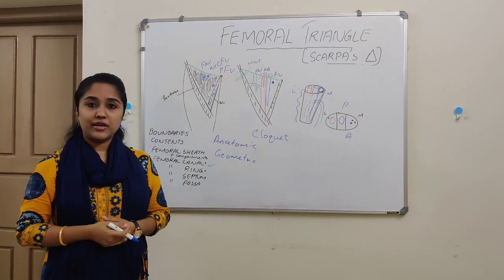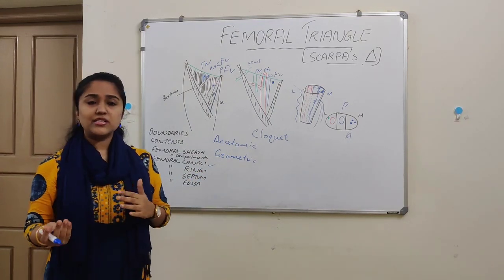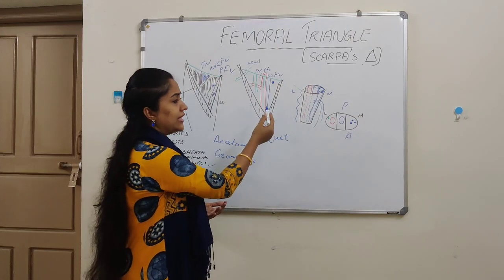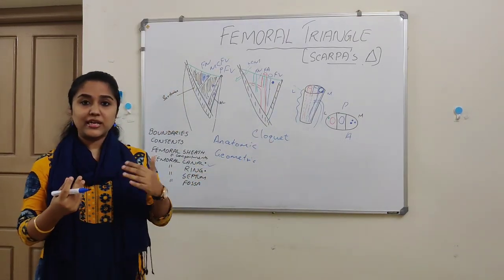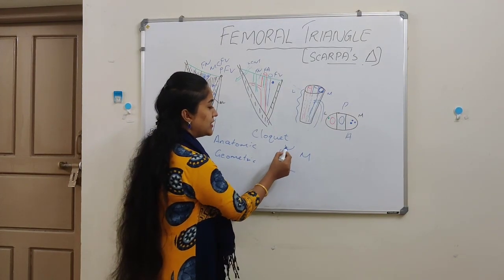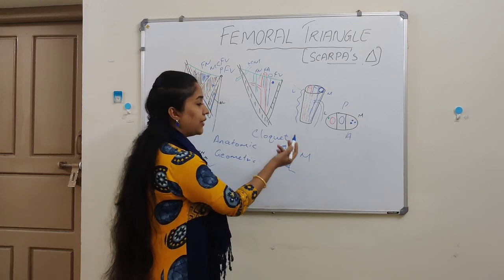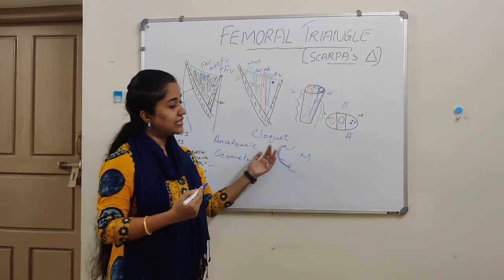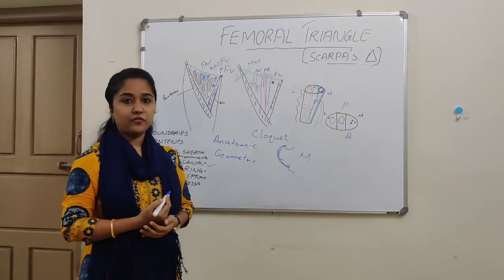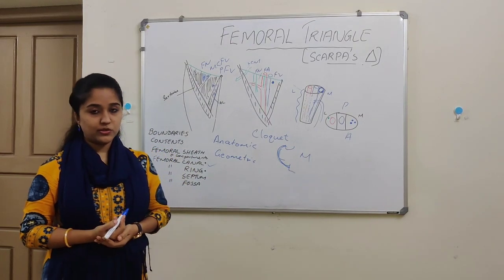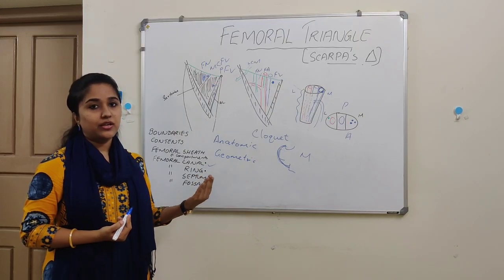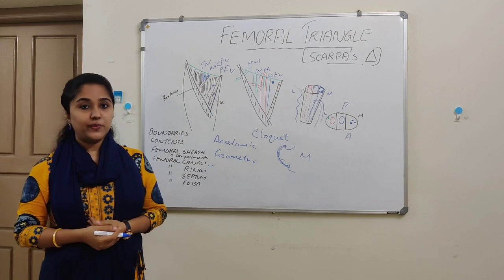Those are the structures that pierce the femoral sheath. Now we will see the relationship of the saphenous opening to the femoral sheath. The saphenous opening has four margins: upper, lateral, lower, and medial. The upper, lateral, and lower margins are present in front of the femoral sheath, whereas the medial margin is present beneath the femoral sheath. The saphenous opening is covered by the cribriform fascia, so the anterior medial surface of the femoral sheath is related to the cribriform fascia.